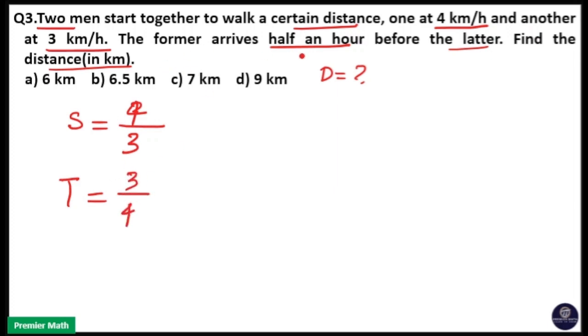Here, the former arrives half an hour before the latter. That means the difference between both of them is half an hour. But the question says half an hour, but here you can see the difference between 3 parts and 4 parts is 1 part. So 1 part is equal to half hour.